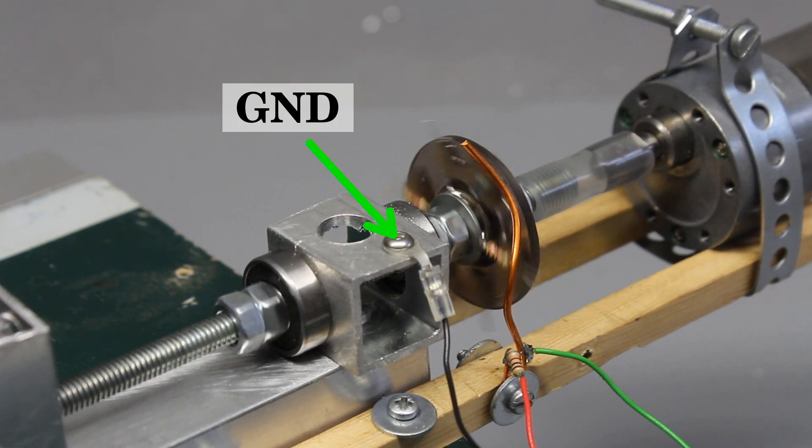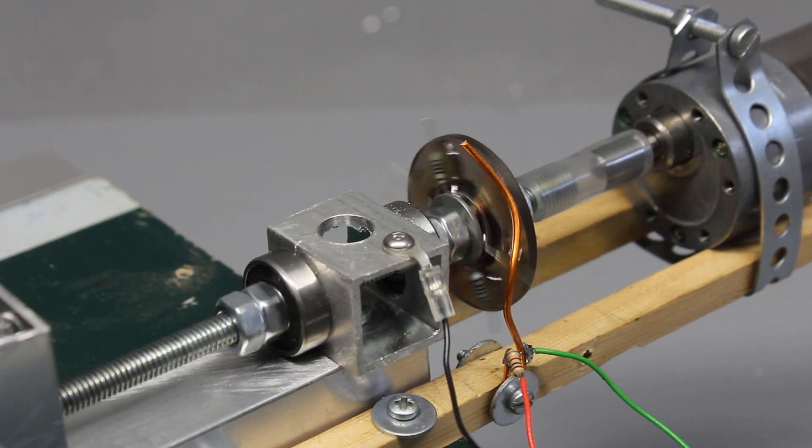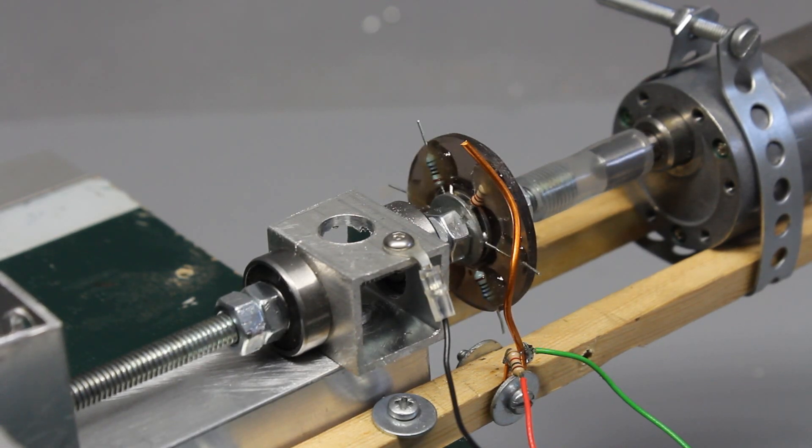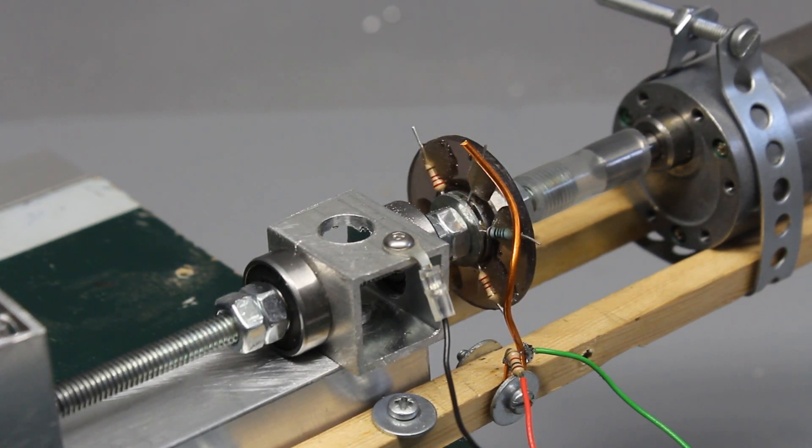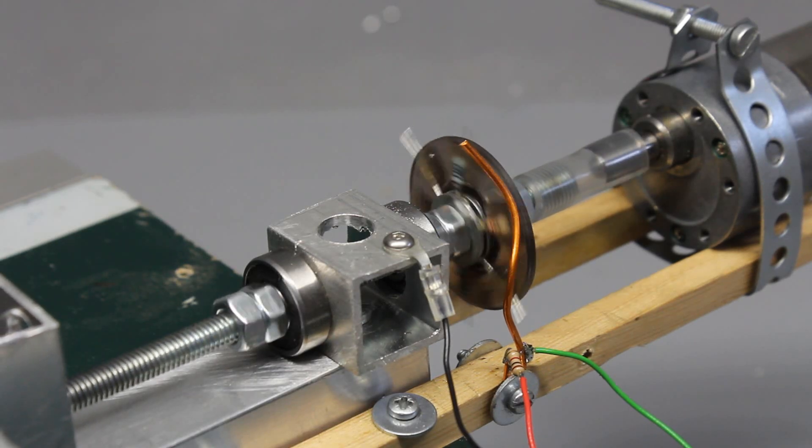Contact bounce is a huge drawback of this type of electromechanical encoder, limiting the maximum revolution speed.